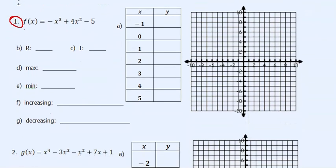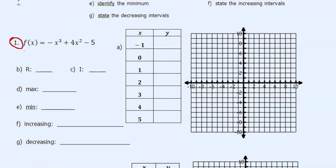Let's look at number 1. We have f of x equals negative x cubed plus 4x squared minus 5. This is an odd degree polynomial, so your domain and range will both be all real numbers. The total complex numbers we have is 3.